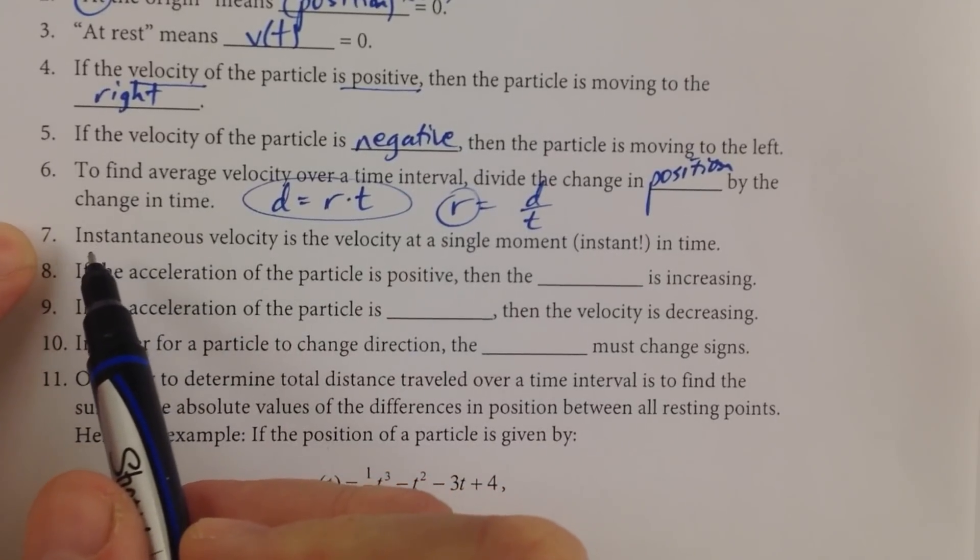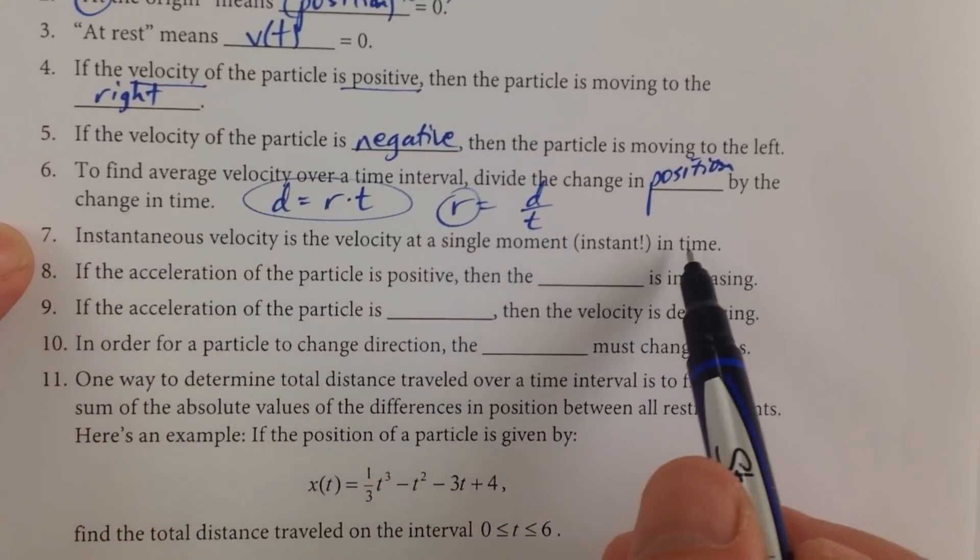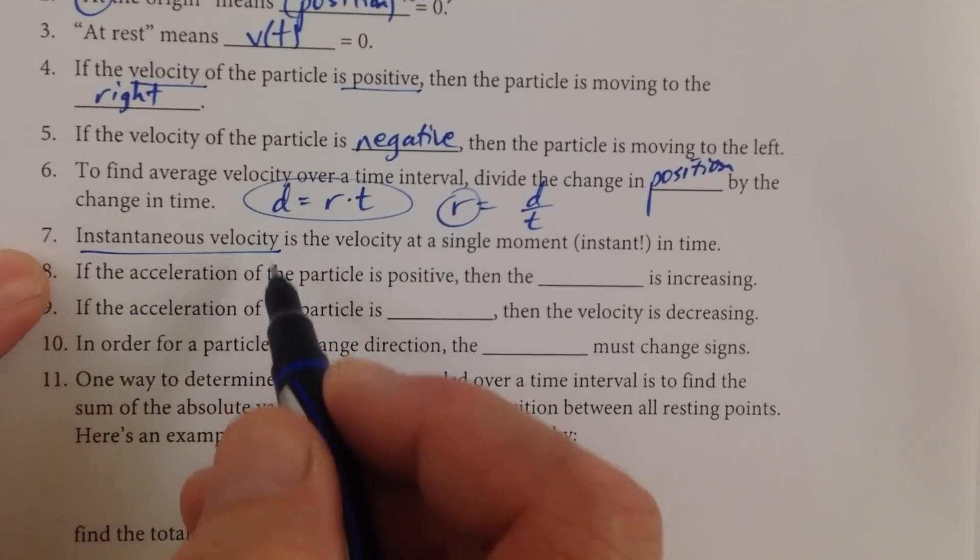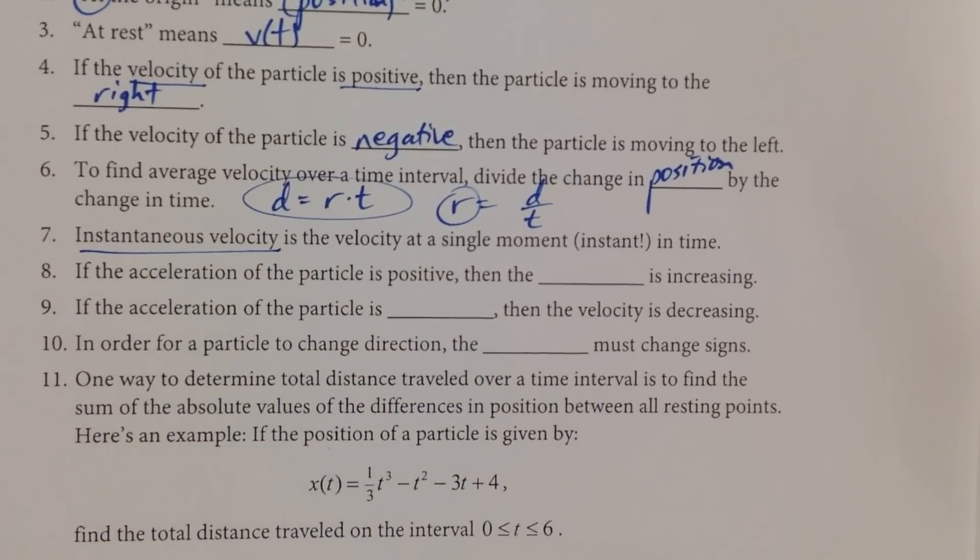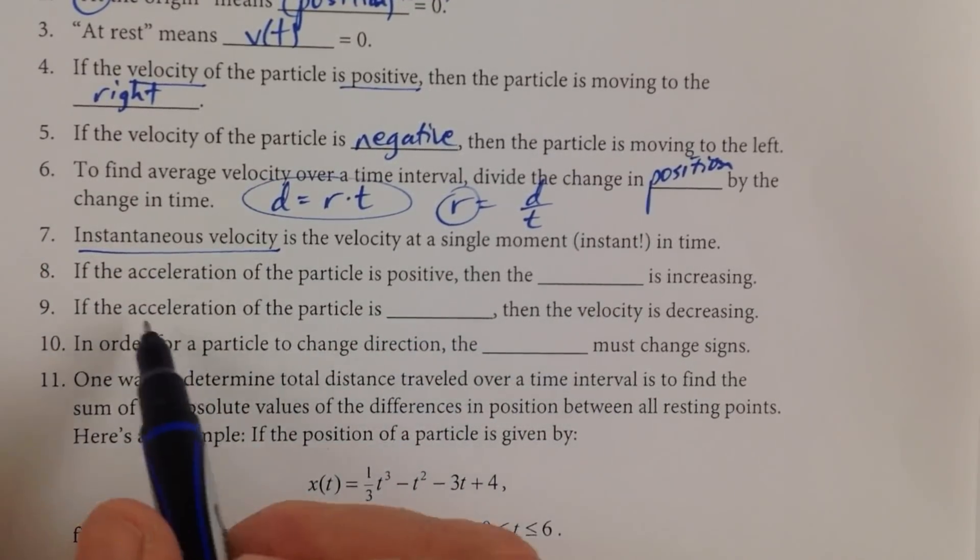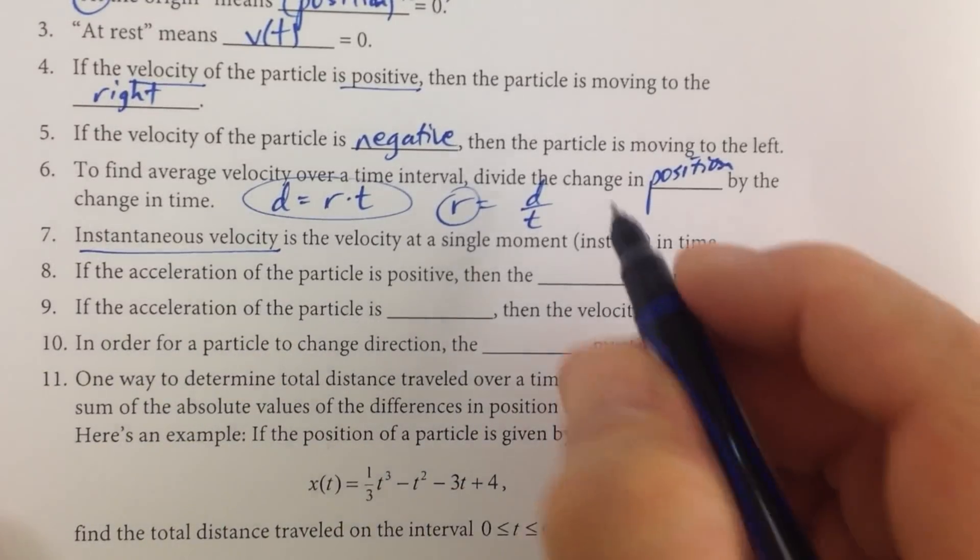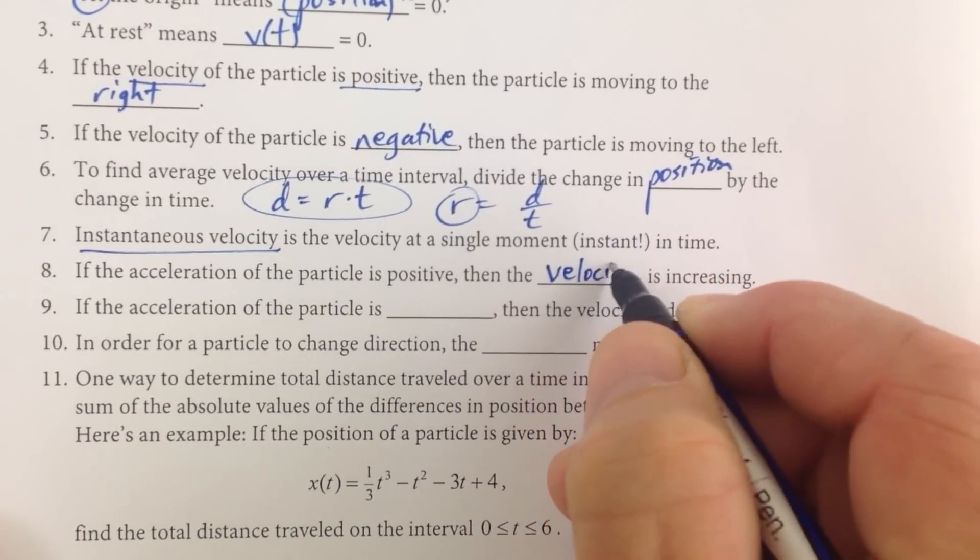Instantaneous velocity is the velocity of a single moment in time. That's the derivative at a certain moment. And then we have, if the acceleration of the particle is positive, acceleration of the particle is positive, then the velocity is increasing.